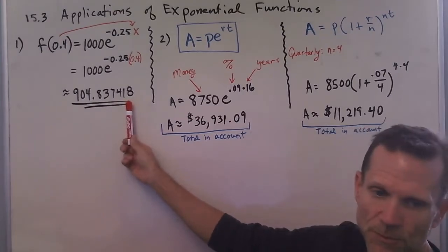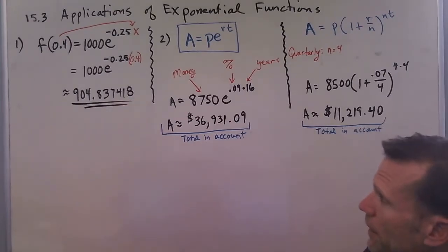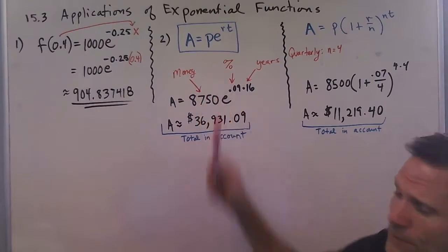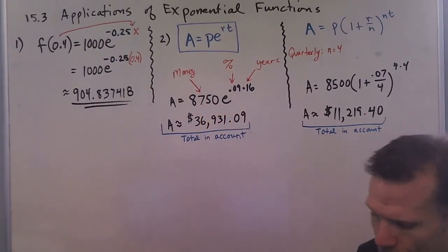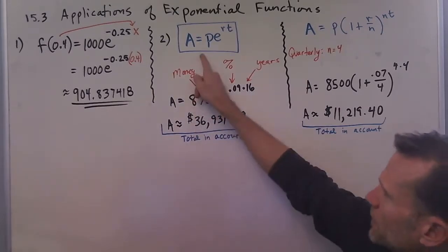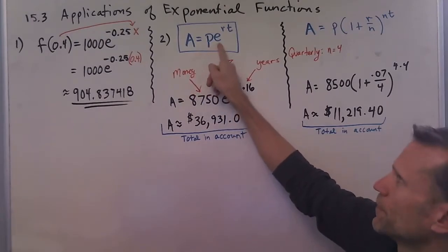Now the second problem talks about continuous compound interest, so the interest is being compounded continuously. That formula is this here. Some people remember it because there's a shampoo named Pert. A stands for the accumulated amount in the account.